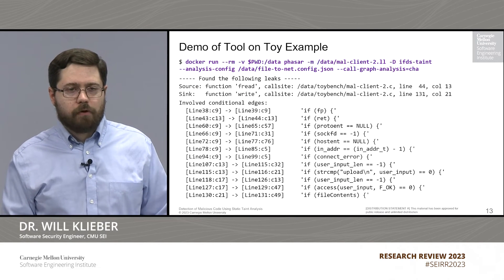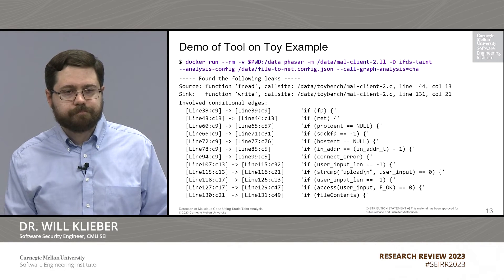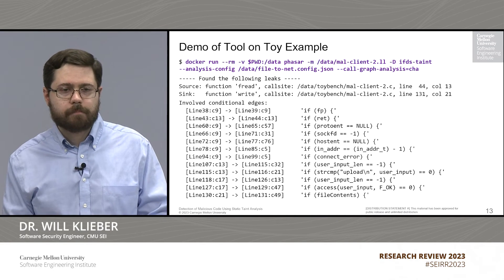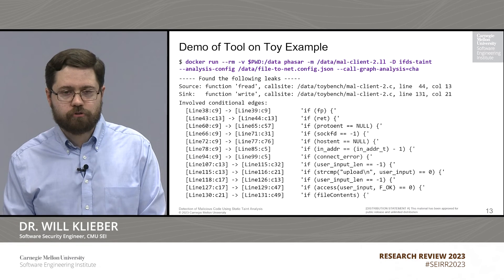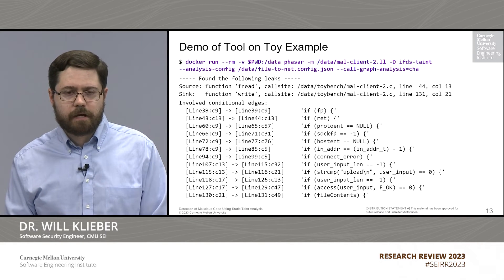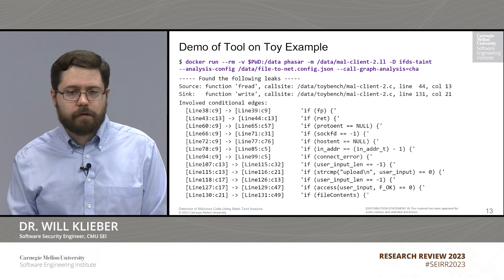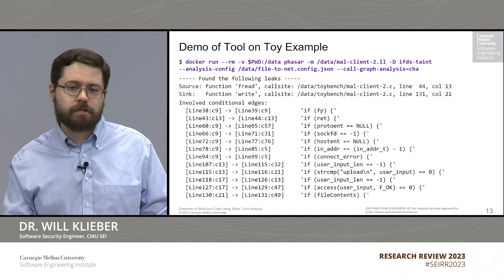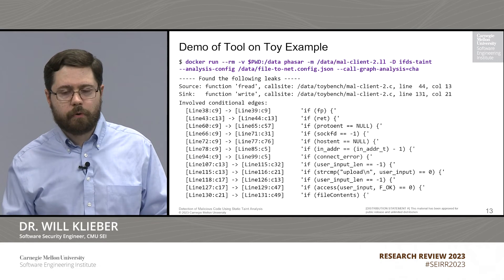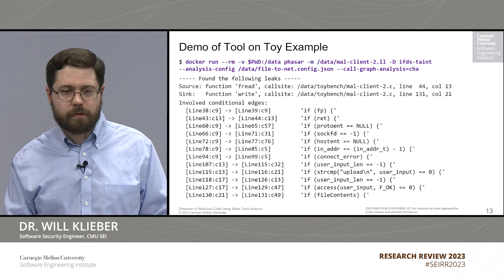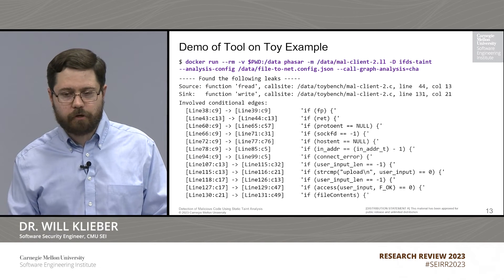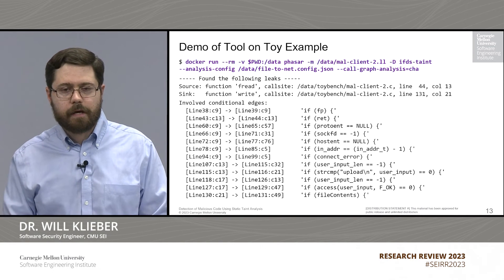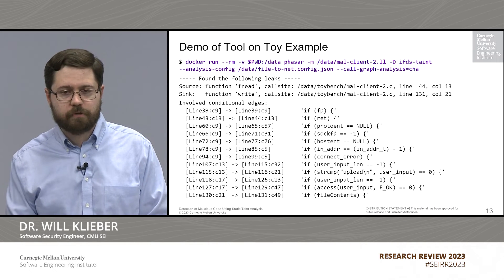Here we see an example of running our tool on a toy example. We see that it finds a flow from the source f_read to the sink write, and it gives a list of involved conditional edges. Looking at this list, you can see that a lot of these conditions are actually just error checking — for example, checking if there's a connect error, or if user input length is negative one indicating an error condition. Those are all noise we want to filter out. One of the things we're working on is identifying obvious false positives — things not very indicative of malicious code — and filtering those out to highlight conditionals that actually are potentially indicative of malicious code.